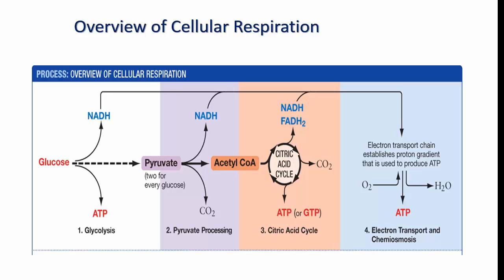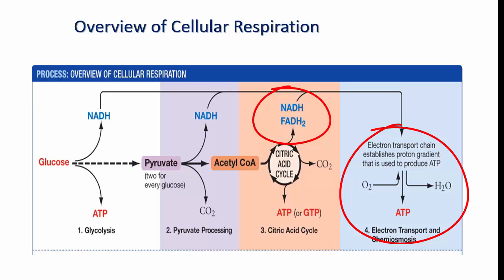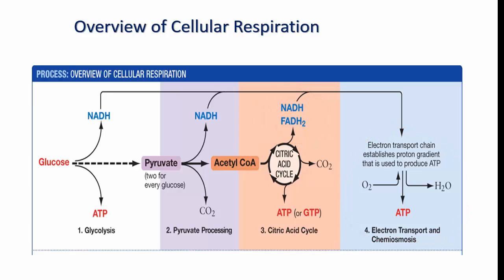ATP is produced at different steps of the aerobic respiration process. Since glucose is oxidized in these metabolic pathways, the electrons lost by glucose are captured by electron carriers, mainly NAD, thus forming NADH. By the end of the citric acid cycle, glucose is completely oxidized. The reduced form of NAD, or NADH, as well as another electron carrier, FADH2, undergo oxidation in the electron transport chain, resulting in the reduction of molecular oxygen and the formation of water. Most of the ATP produced in aerobic respiration results from the redox reactions occurring in the electron transport chain.